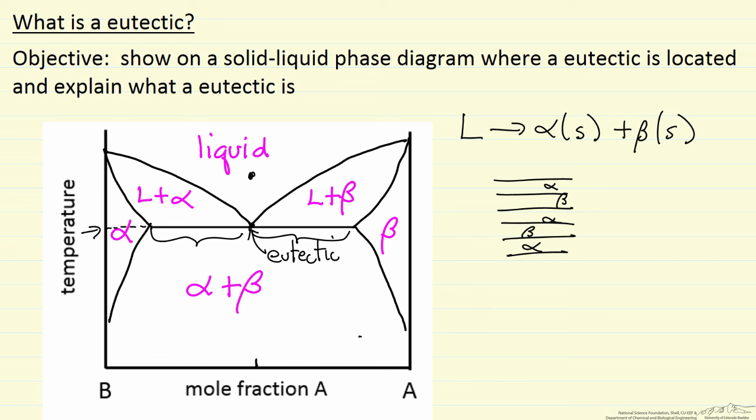And the composition of the alpha phase is this mole fraction here, the composition of the beta phase is that mole fraction. So we have eutectic, notice it's the lowest melting point, important point, the lowest melting temperature for this system.